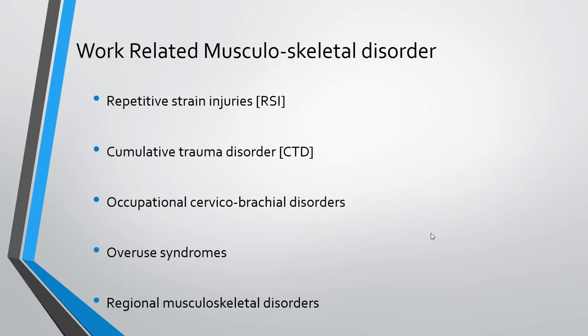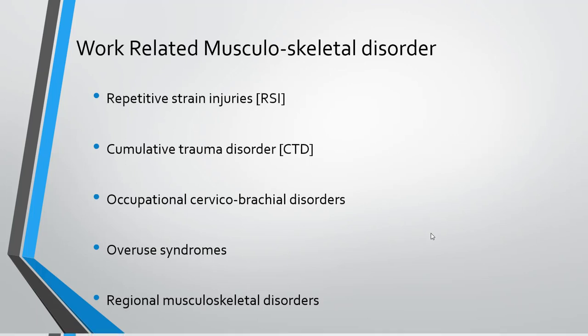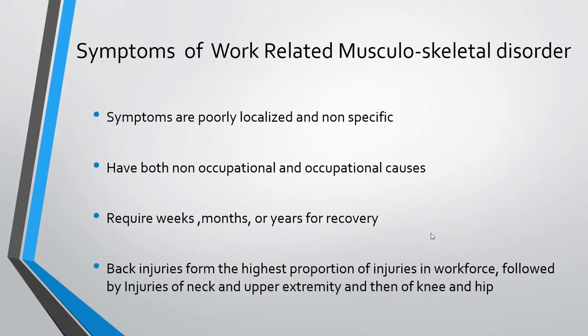Work-related musculoskeletal disorders are also known by several synonyms: repetitive strain injuries, cumulative traumatic disorder, occupational cervical brachial disorders, overuse syndromes, and regional musculoskeletal disorders — all resulting from excessive force, repetitive movements, excessive bending, twisting, reaching, and deviation from neutral postures. The symptoms are poorly localized and non-specific, with both occupational and non-occupational causes requiring weeks, months or years for recovery. Back injuries form the highest proportion of injuries in the workforce, followed by neck and upper extremity, then hip and knee.